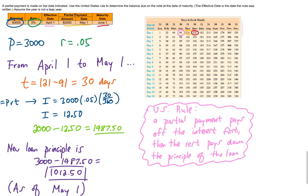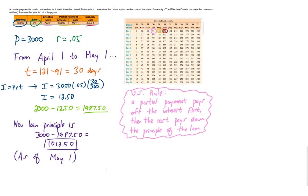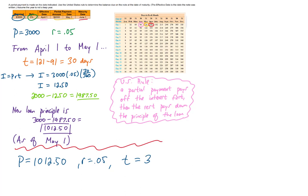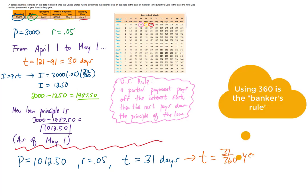We have a whole new interest problem on our hands that starts on May 1st and ends on June 1st. On May 1st, we have a principal on our loan of $1,012.50. We still have the same interest rate. Between May 1st and the maturity date of this loan, which is June 1st, you'll notice up on this chart that there are 31 days between those two dates. So our time period of this loan is going to be 31 days. This T we need to convert into years. So we're going to change our time into 31 over 360 years.